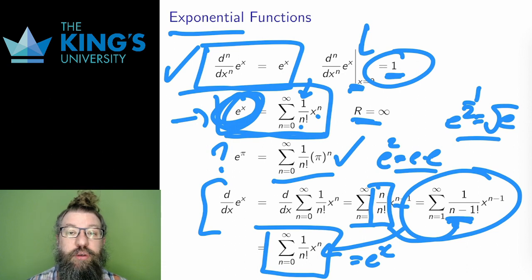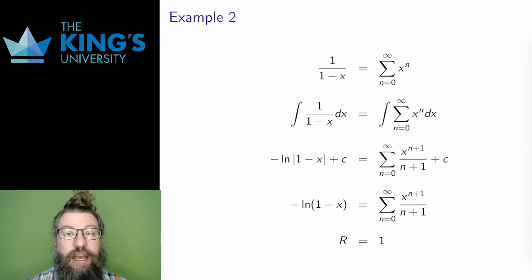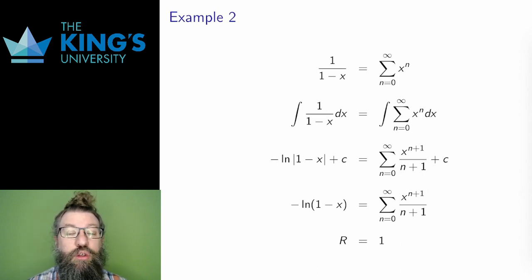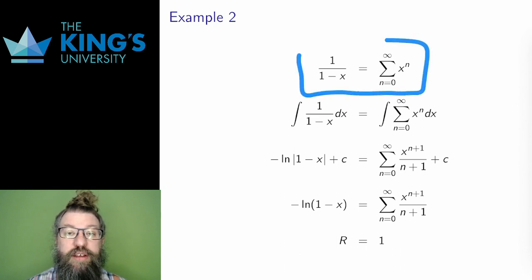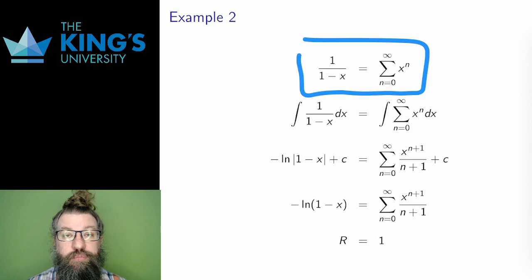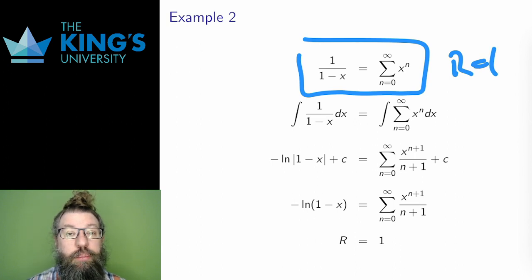The full algorithm to calculate a series is to find a pattern to the derivatives, evaluate at the center point, and put those values into the form of a series. However, sometimes I can use existing series to build new series without having to use the full algorithm. This is the geometric series: 1 over 1 minus x is expressed as the sum from n equals 0 to infinity of x to the n, at least when the absolute value of x is less than 1. This is radius of convergence r equals 1 around center point 0. I know I can integrate series, so let me integrate both sides of this. On the left, this is a logarithm integral, and on the right, I integrate with the power rule in each term.